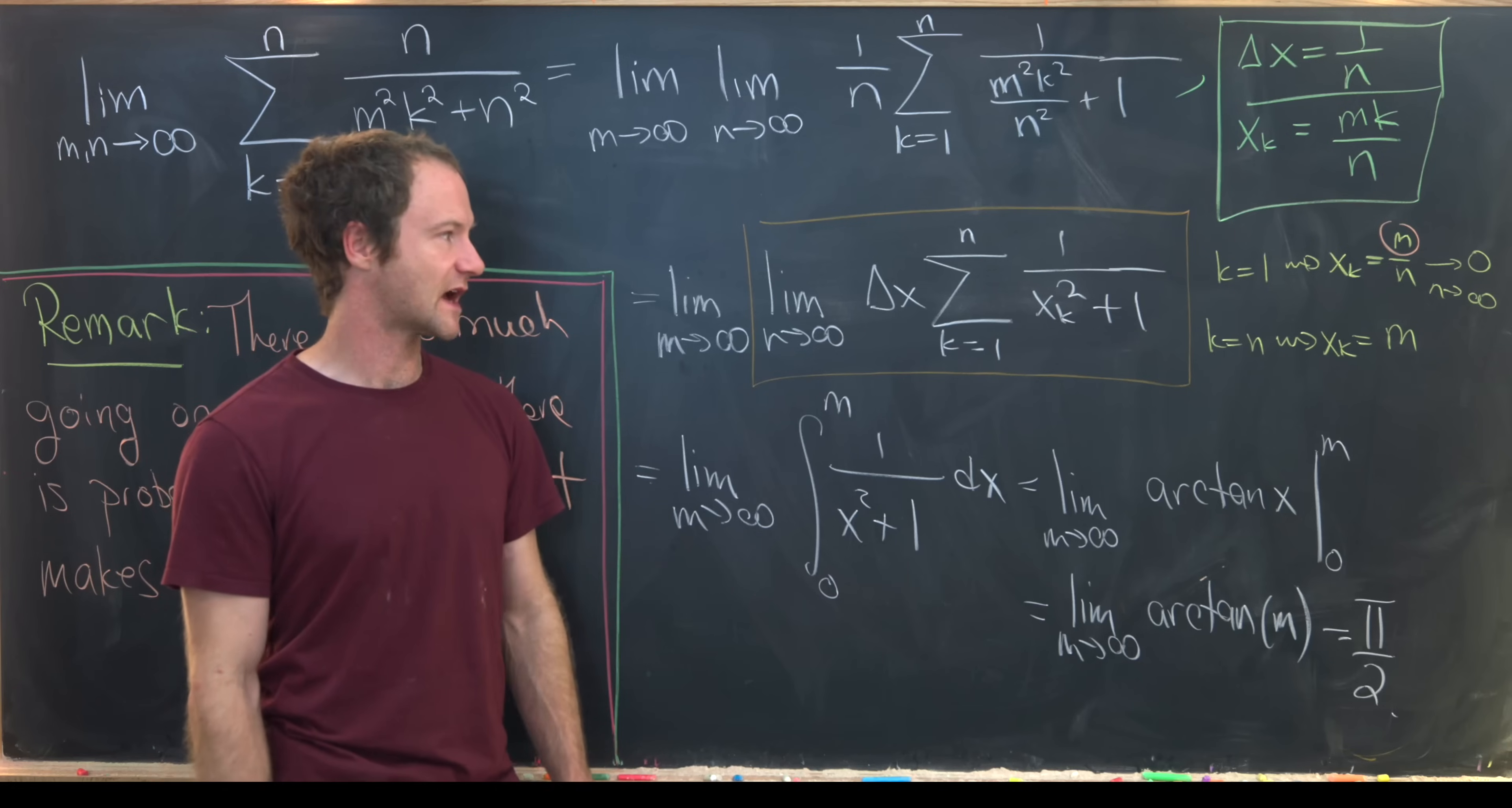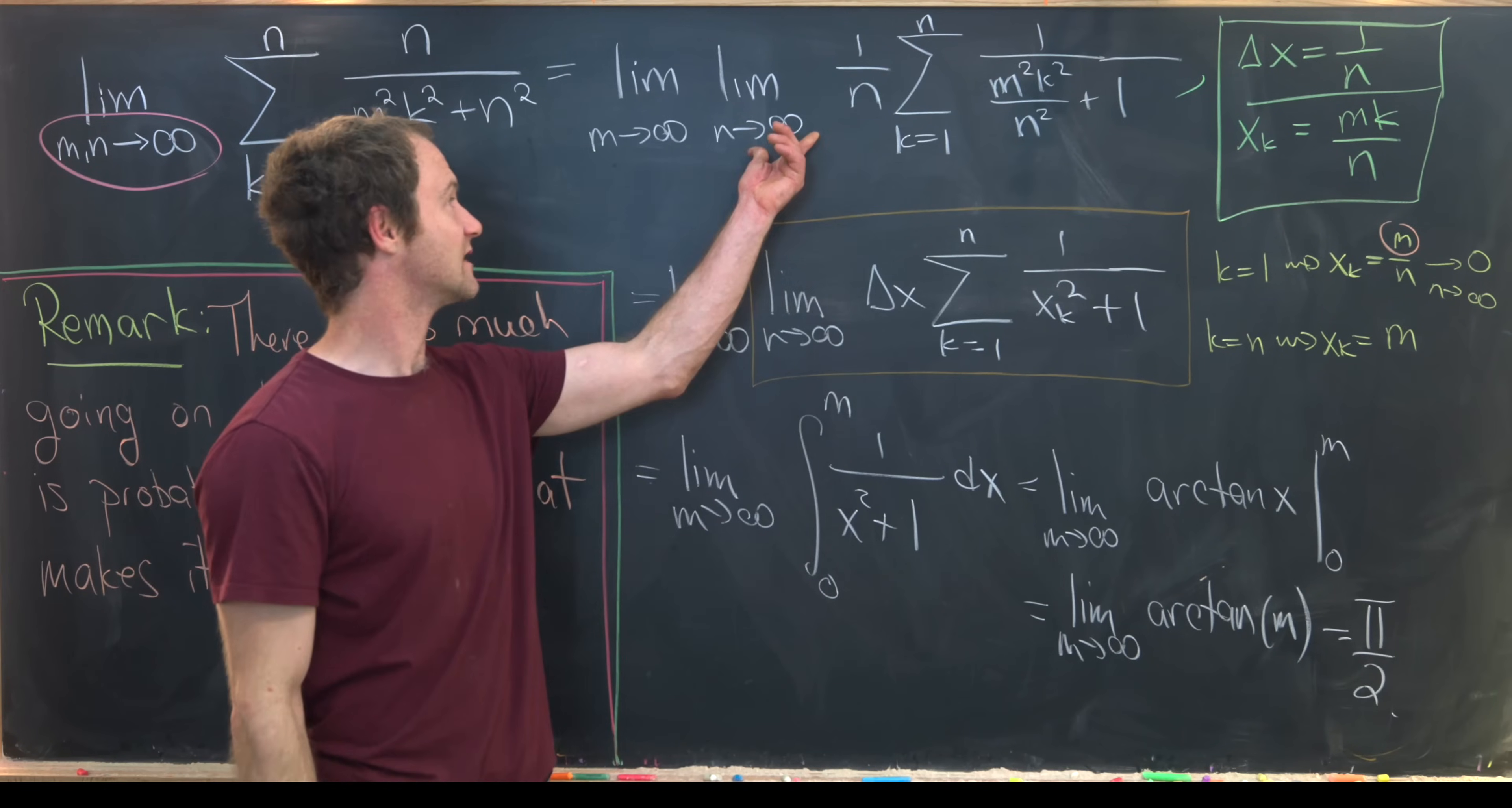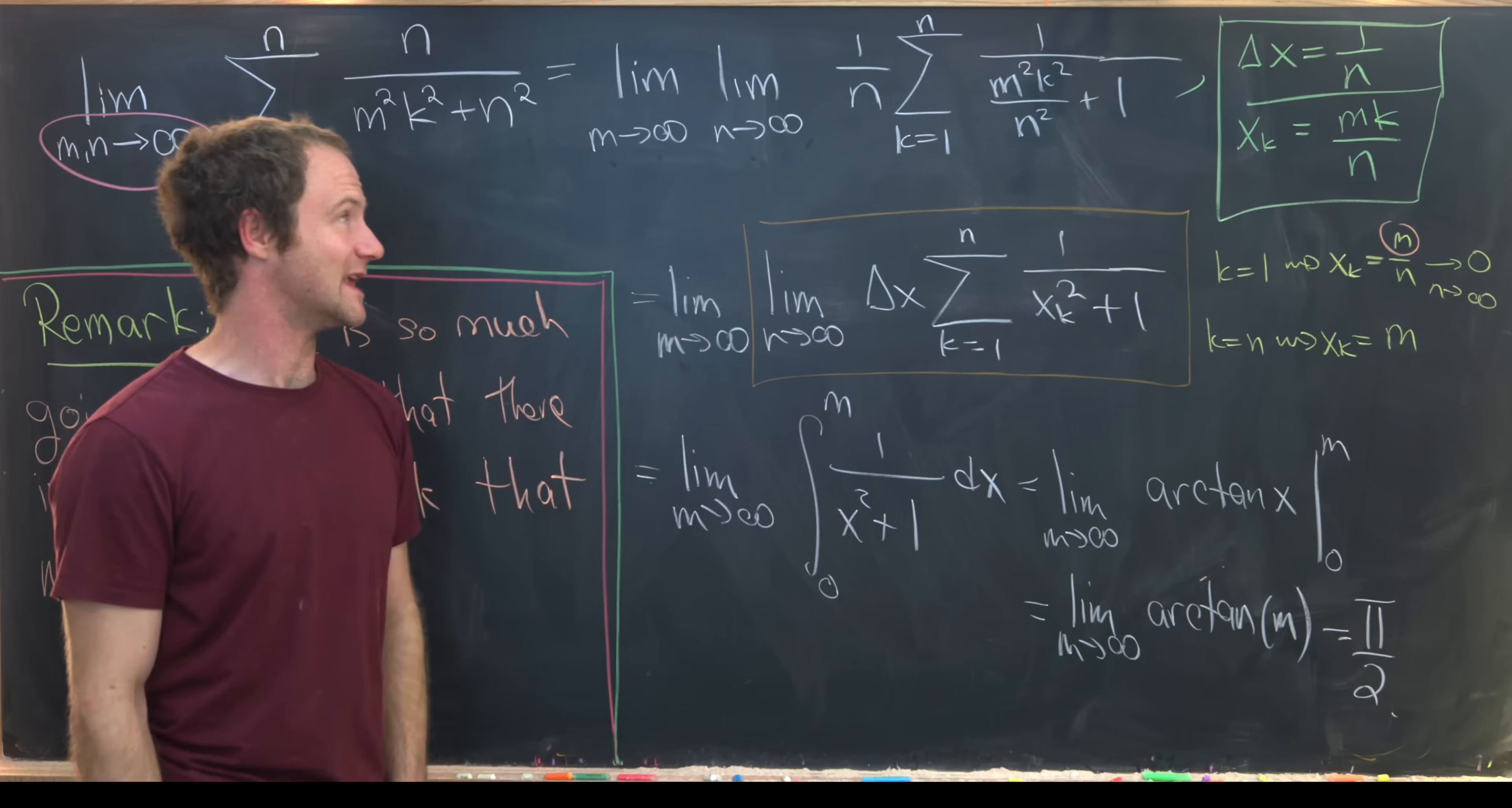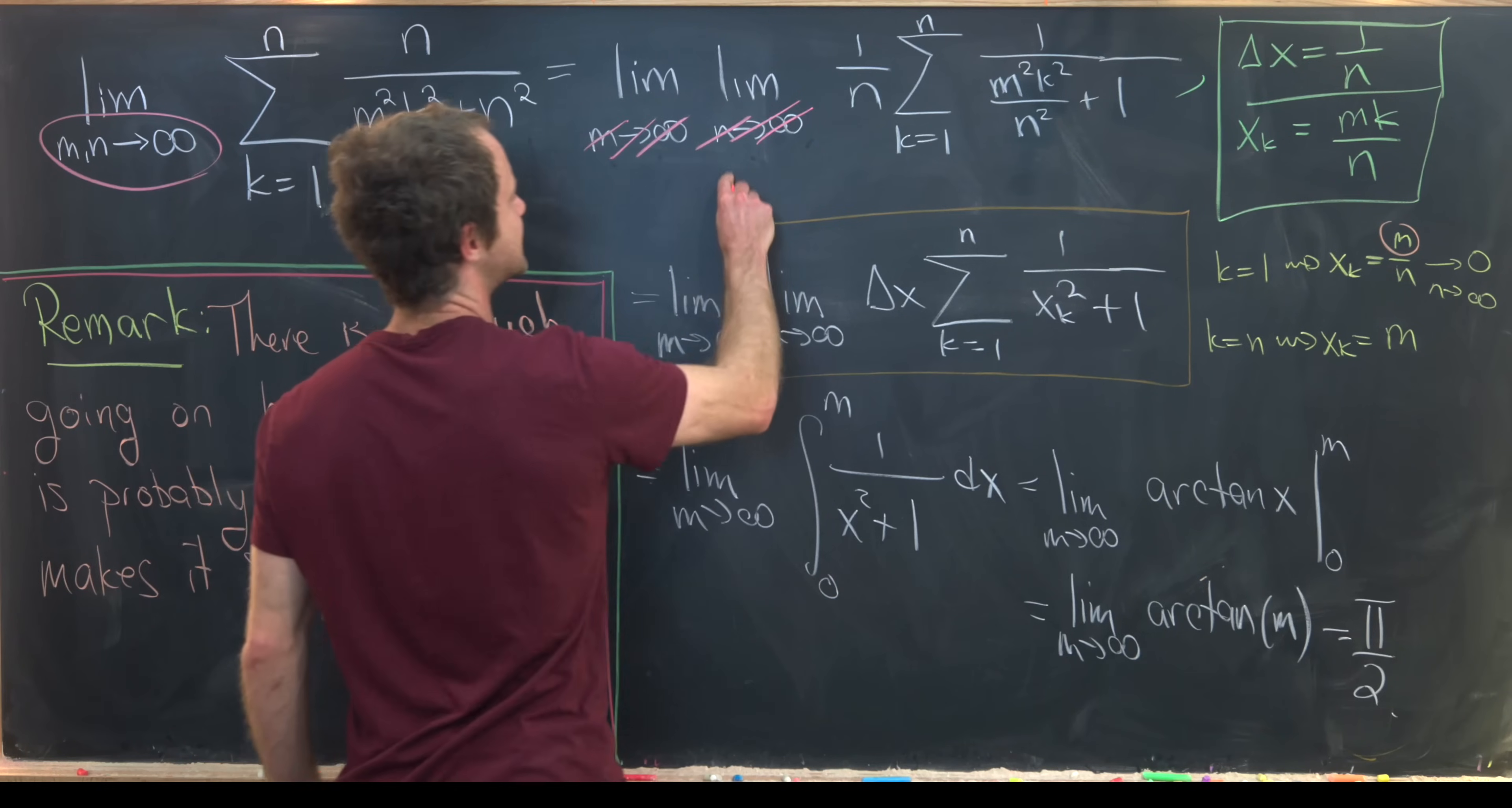Finishing it all off, we took the limit of the antiderivative giving us pi over 2 in the end. Before I leave you guys, I want to notice that I made an implicit assumption here about the ordering of these two limits. I took the limit as n goes to infinity on the inside and the limit as m goes to infinity on the outside.